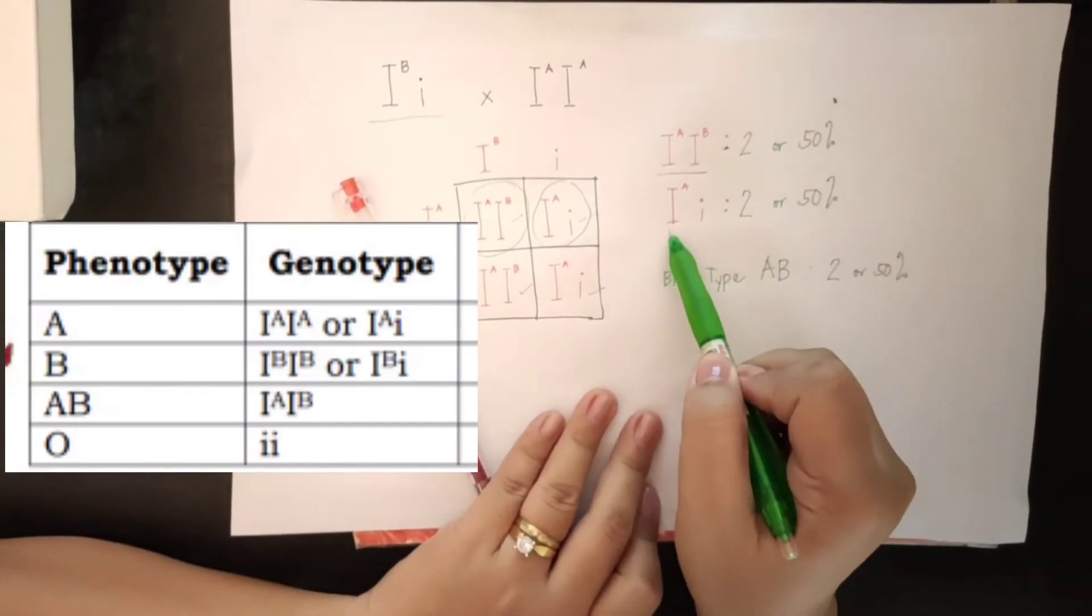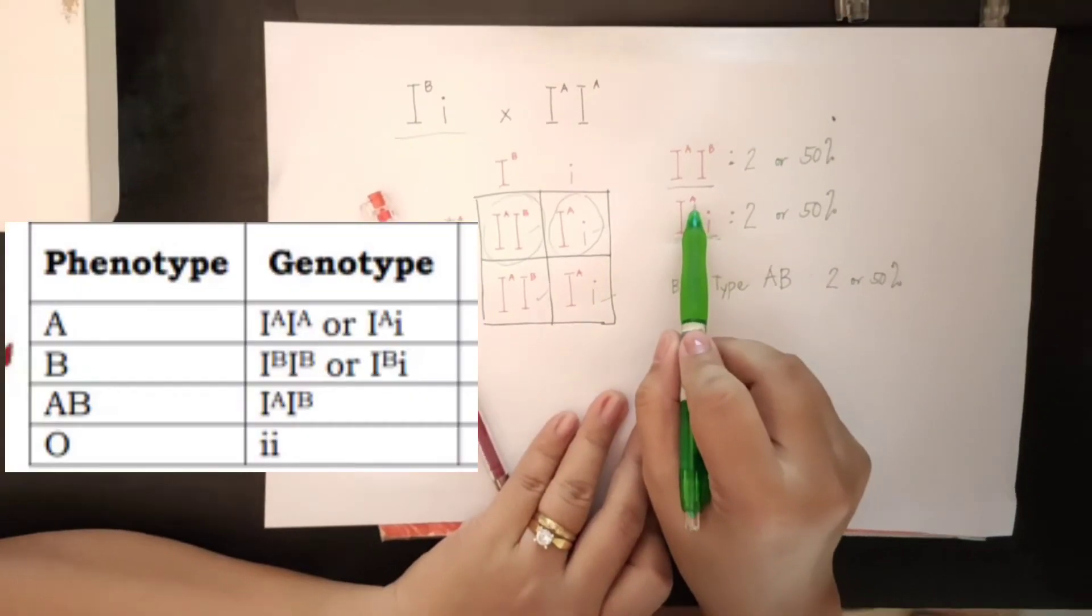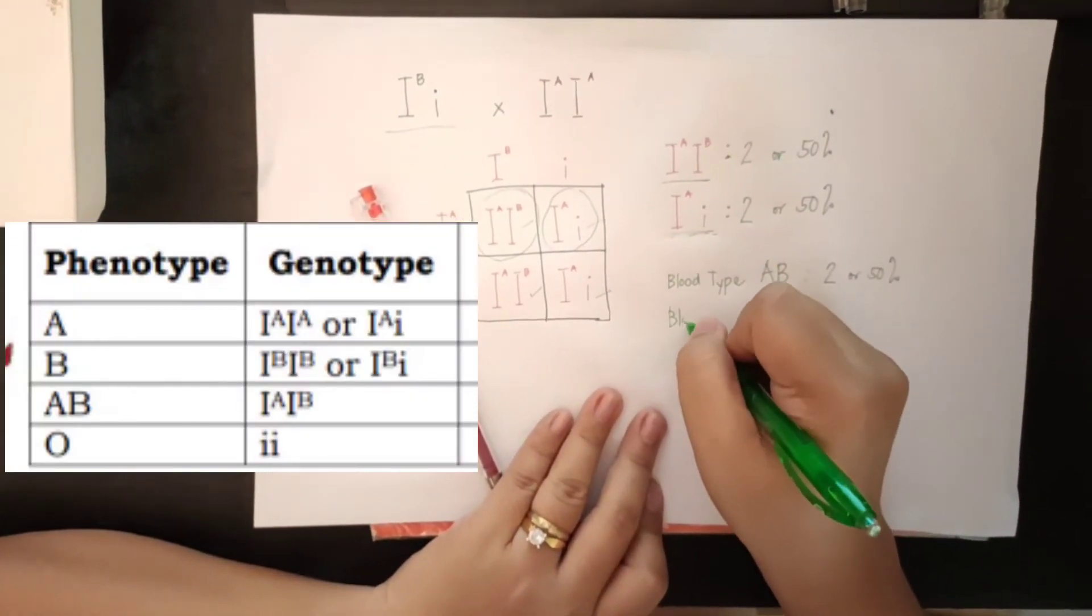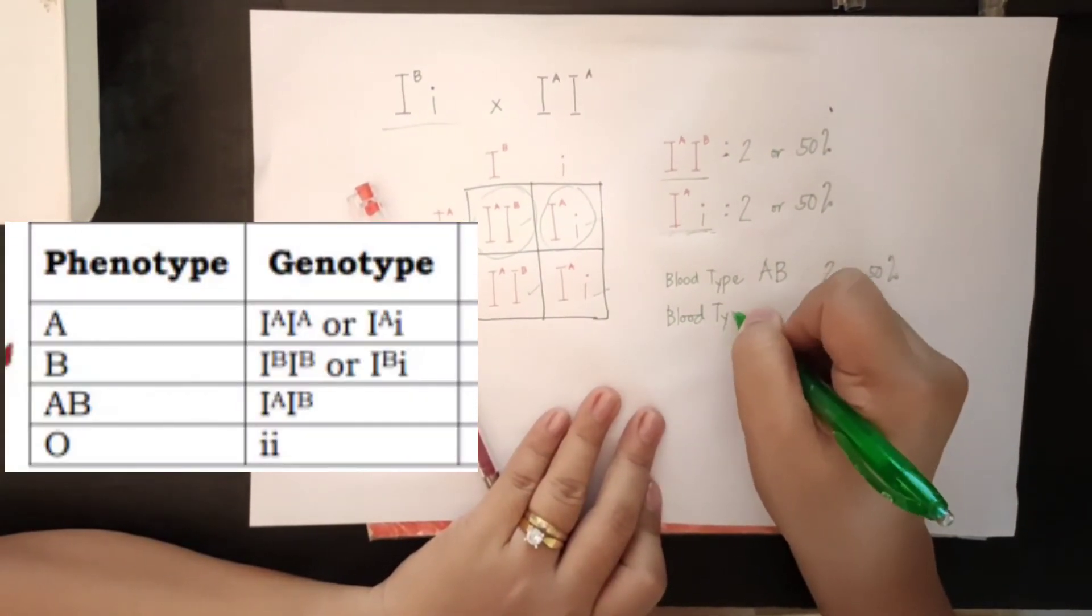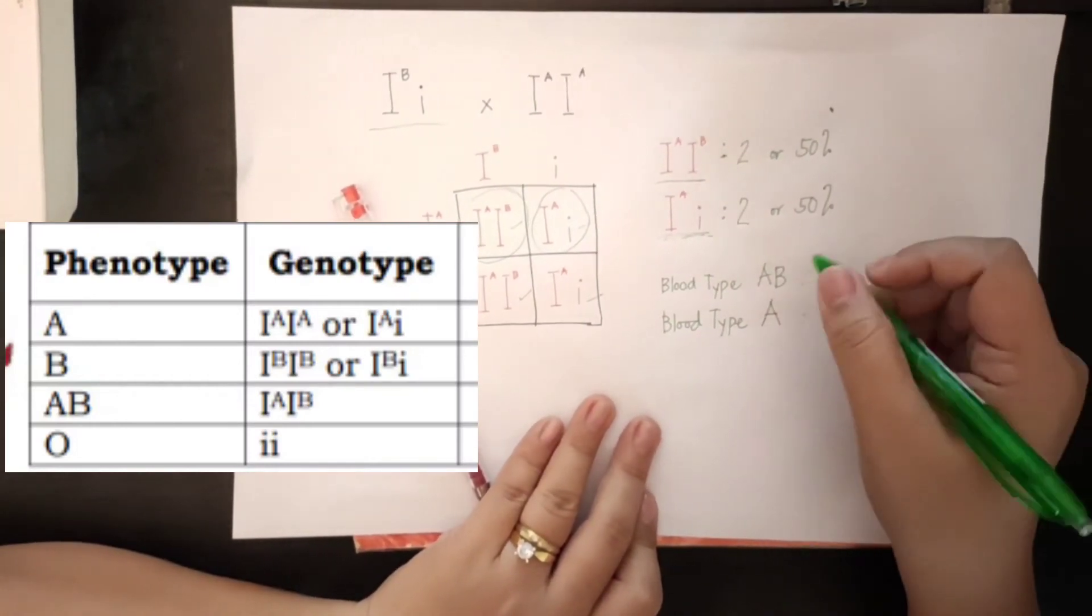And for this one, this genotype, since the dominant is A, so that is the genotype of the blood type A. And how many again? We have 2 or 50%.